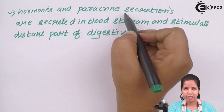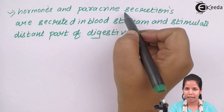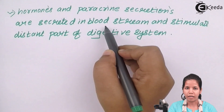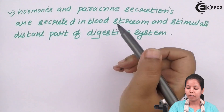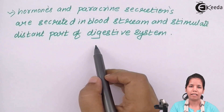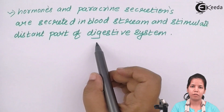Hormones and paracrine secretions, which are secreted by paracrine glands into the bloodstream, regulate the digestive system directly or indirectly — including digestive juices and anti-material such as anti-trypsin and anti-dipeptidases.